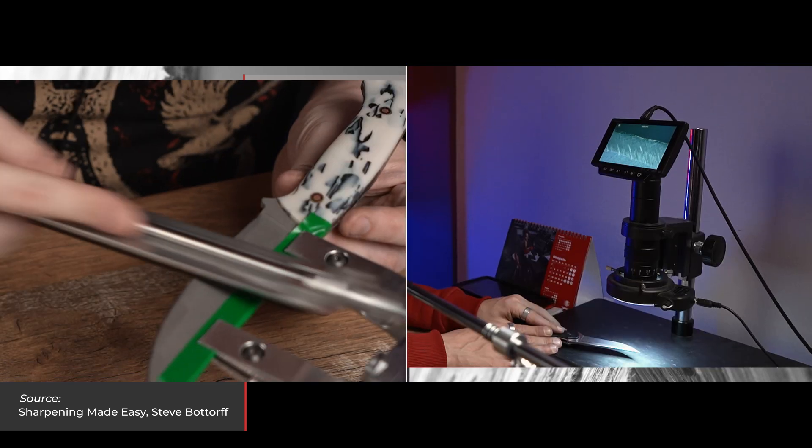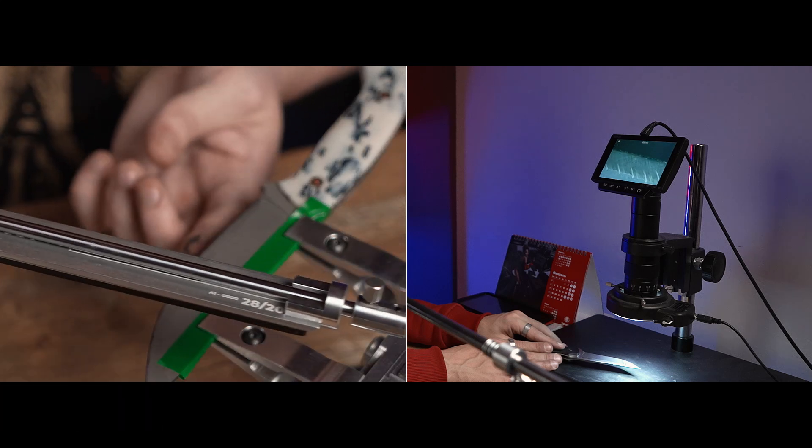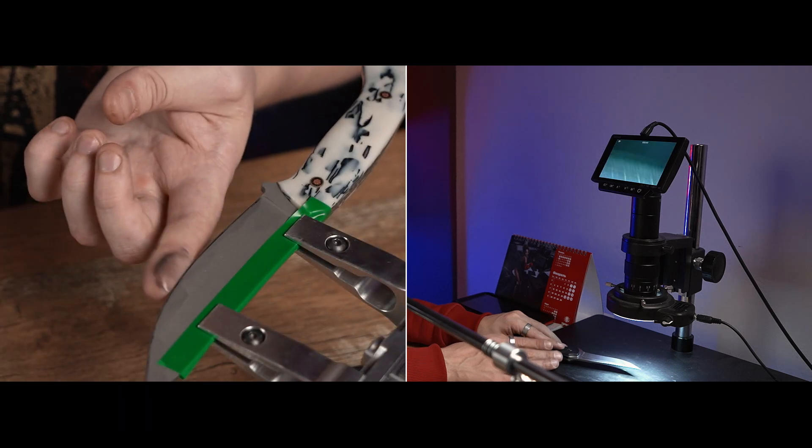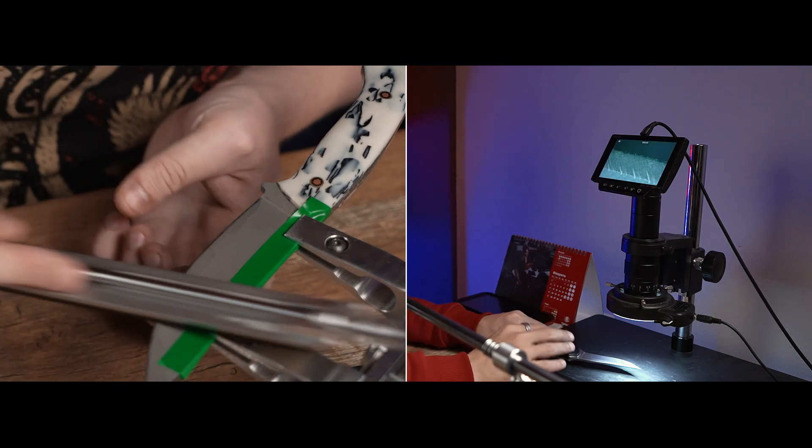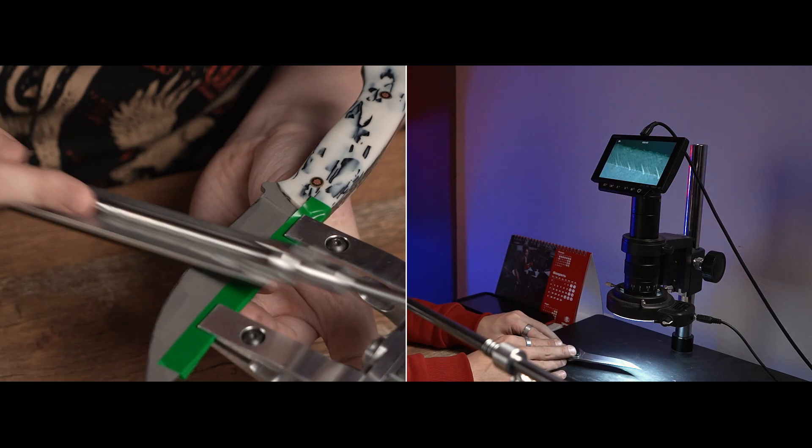When we reshape the cutting edge using a regular or coarse stone, we can feel the presence of the burr with our fingers or see it using a magnification glass or a regular microscope.